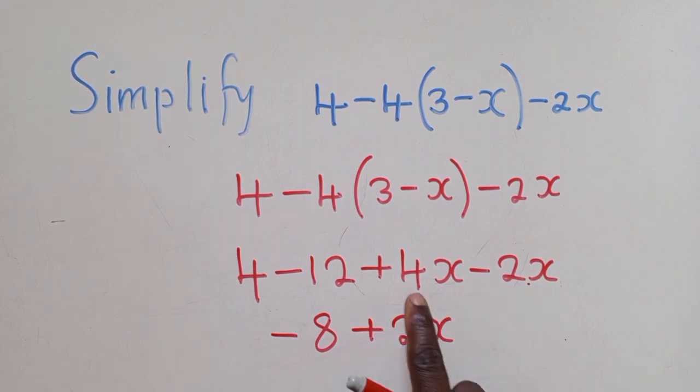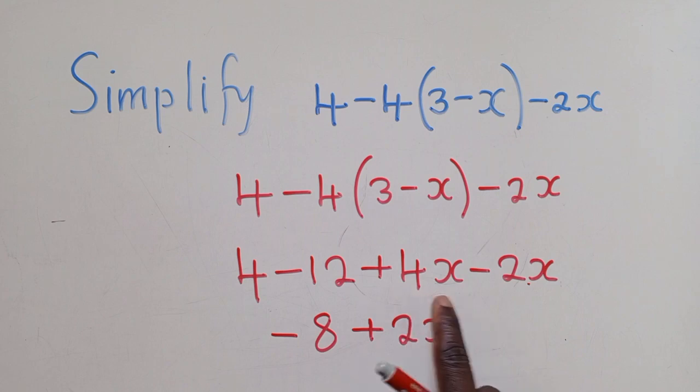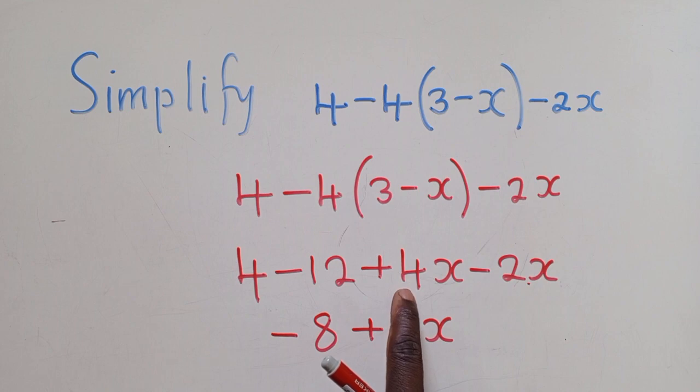When it comes to numbers and letters like it is over here, we subtract the numbers, we maintain the letters. So x we've maintained because there's x here, there's x. 4 minus 2, it's what? It's 2.